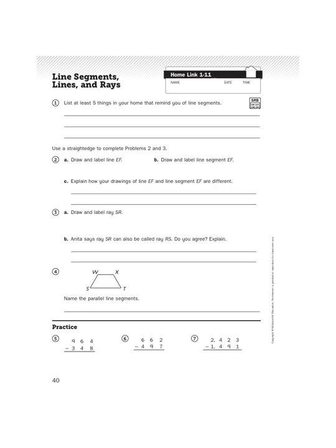The first question says, list at least five things in your home that remind you of line segments. Since I'm not sitting in your house right now, I can't answer that for you or help you with that. So you need to look around your house and see if there's anything that has a beginning and an end to it that looks like a line segment.